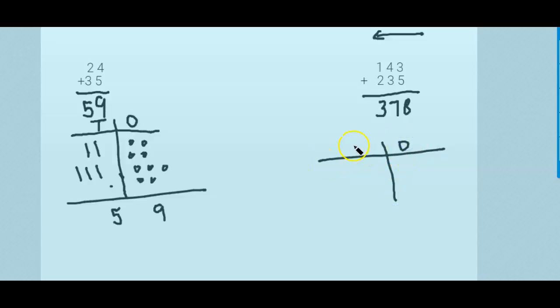To draw a picture of that, now you're going to have to include your hundreds also. So here, I'll start with 100 and 40, 3, and then 200 and 30, 5.